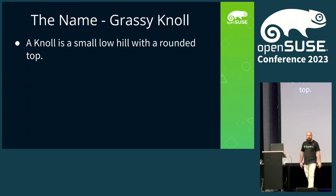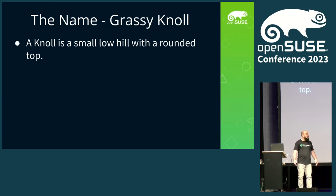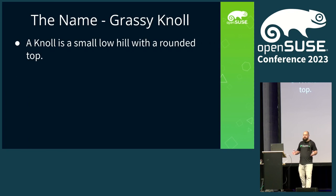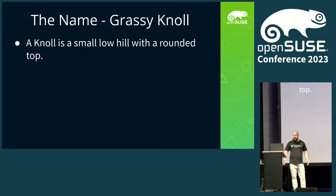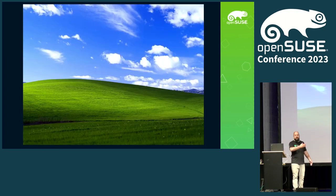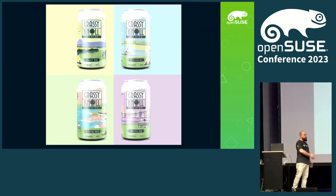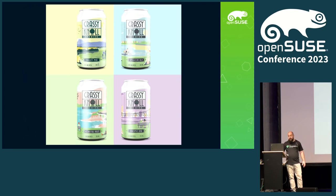Now we come to the name, which got the most comments on the mailing list. A knoll is a small, low hill with a rounded top. I came to this name because we went up in the Alps doing extreme sports and were looking for a nice place to have a picnic — to casually relax. Many of you might recognise the most famous picture of a grassy knoll. In Australia, Grassy Knoll is also a brewery that makes good beer. In other parts of the world it means other things, and as such we are no longer referencing it.